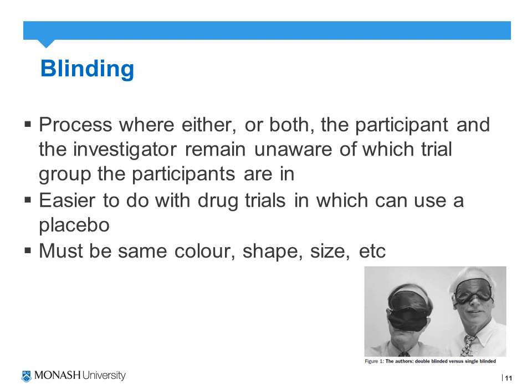Blinding is another key feature of a randomized controlled trial, where ideally neither the participant nor the investigator is aware of which trial group the participant is in. During implementation, this controls for performance bias. At the outcome assessment stage, blinding the investigators reduces the chances of detection bias — that is, the manipulation of results according to which group patients have been allocated to.